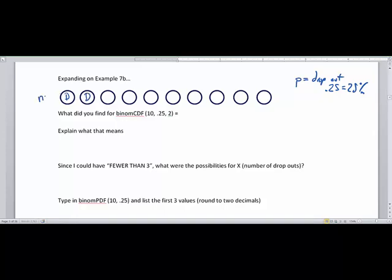one dropout, or none of the students to be a dropout. So this is actually doing three problems at once. It's doing the binomPDF of 10, 0.25 and 0. It's doing the binomPDF of 10, 0.25, 1, and the binomPDF of 10, 0.25, 2, and adding them all together. So this means we're taking our 2, 1, and 0 dropout probabilities.